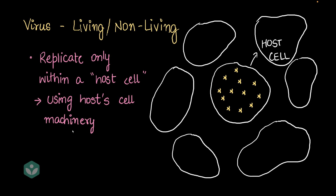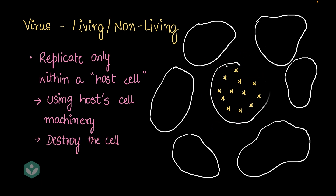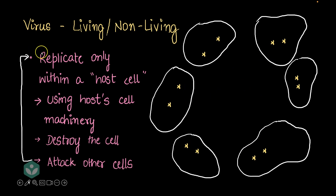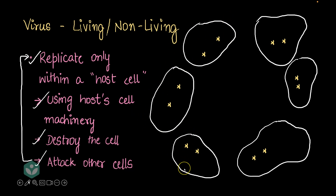What does it do next? We now have so many viruses within one host cell. The viruses destroy the host cell, and once they're done with the host cell, they go ahead and attack more cells, beginning the process all over again — replicating within the new host cell, destroying it, attacking more cells, and this keeps happening. The final effect of all of this is that a large number of cells have been destroyed in the body of the person, and that's when they start falling ill.